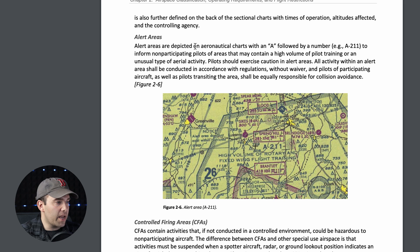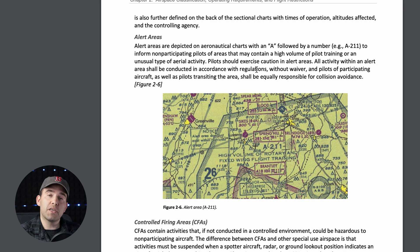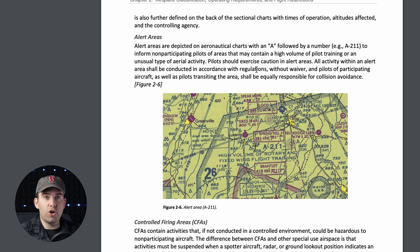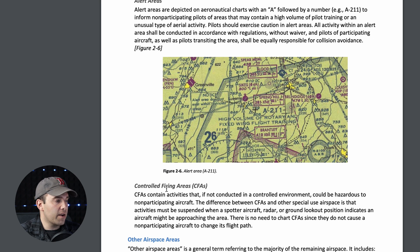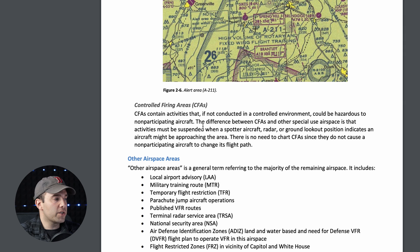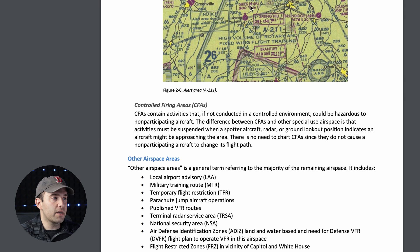Alert areas typically involve high volumes of civilian flight training activity — you just need to be on alert and aware. Controlled firing areas have activities going on but they're required to yield the right of way to you, so they're typically not labeled on the chart.